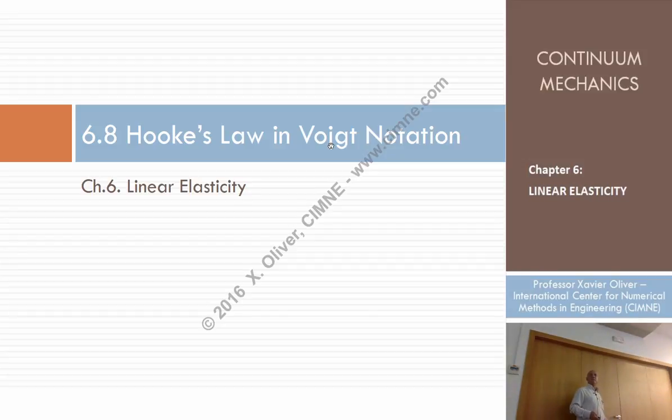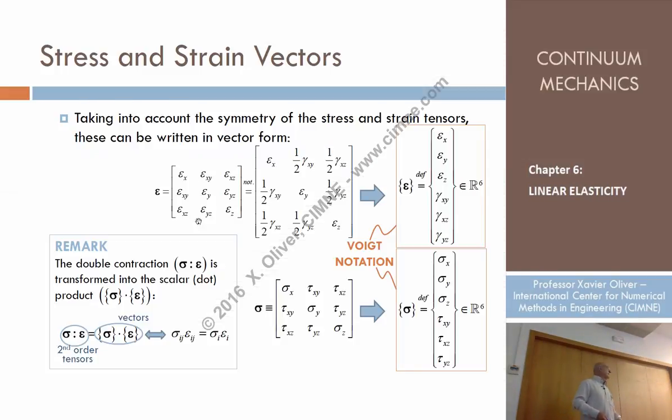The Voigt notation. Of course, to be mathematically consistent, we have used so far what is called the tensor, the scientific tensor notation, in which strains are a tensor. Even infinitesimal strains are considered a tensor, but we know that this is a symmetric tensor because this term is equal to that, that term is equal to that. We can also rewrite that in what is called the engineering notation.